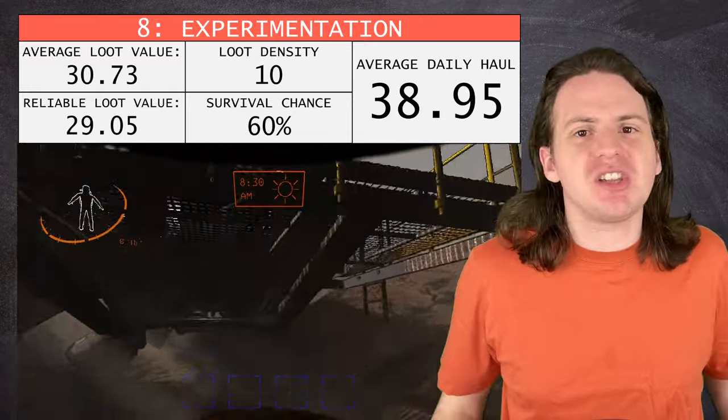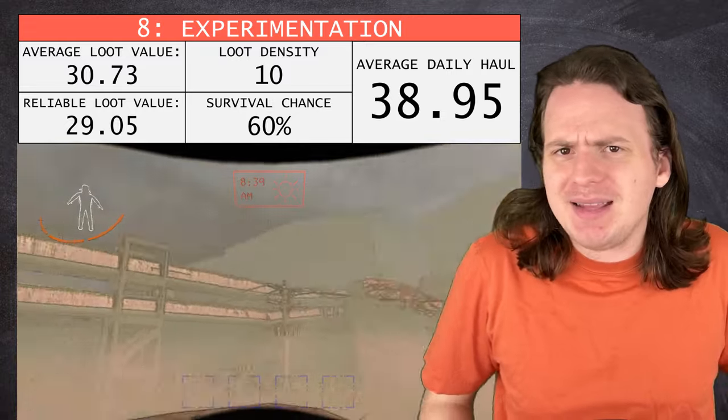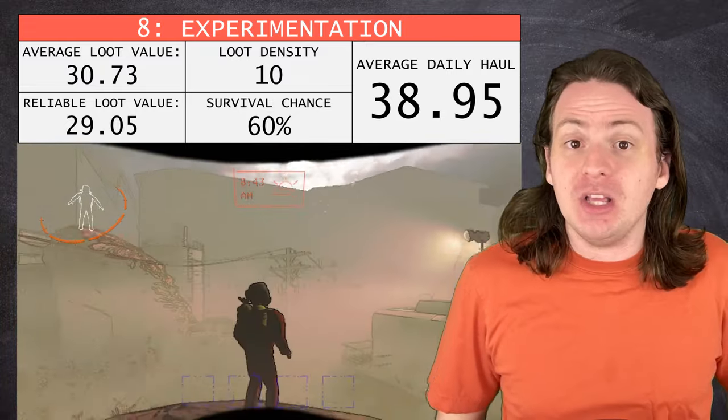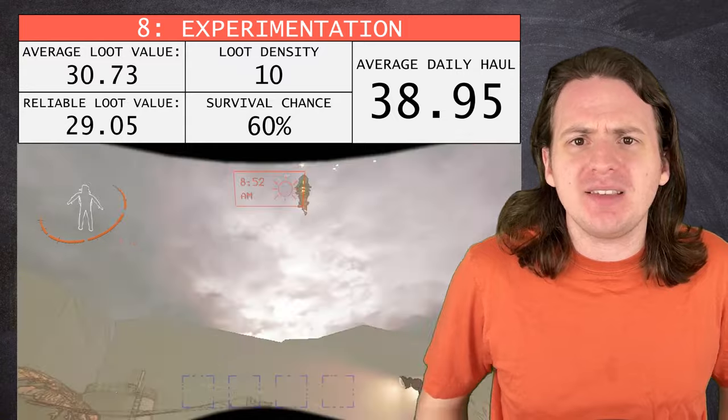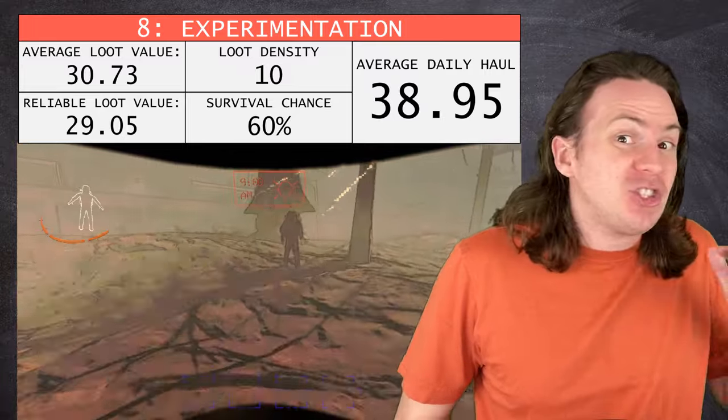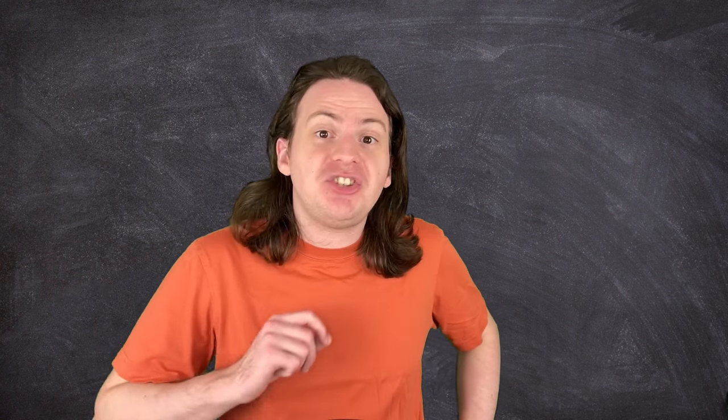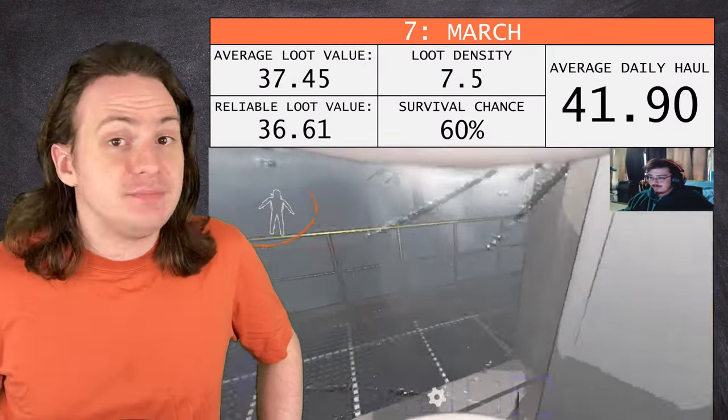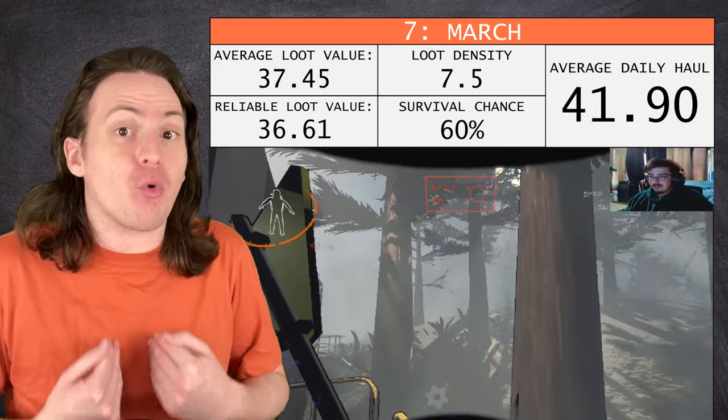Let's run them all down, shall we? Starting from the bottom, experimentation is statistically the worst moon in the game. No surprise there, it's basically just the tutorial moon. It's not that dangerous, but the average value of loot is pretty low, and it can only spawn 8 to 12 items, so there's a very real chance that you could loot the whole factory, never encounter any danger, and still not fill up all nine slots. Just barely ahead of experimentation, the second worst moon in the game is, believe it or not, my beloved March. Yeah, I know, I didn't believe it myself, but it turns out my crew has been messing up real bad.